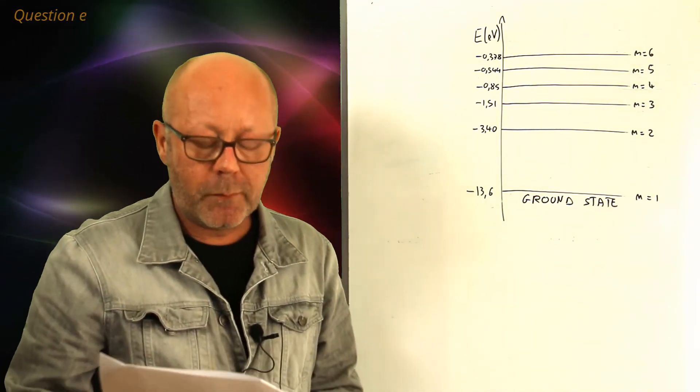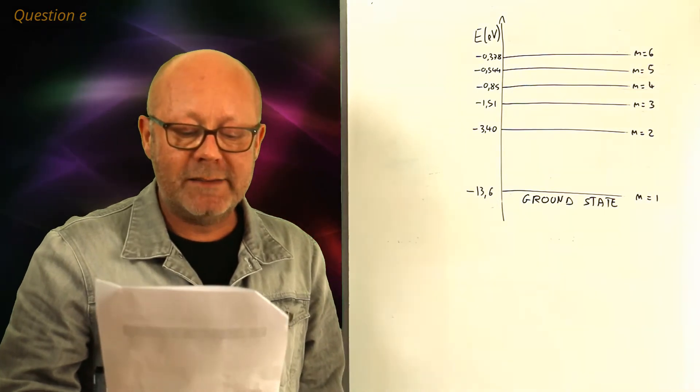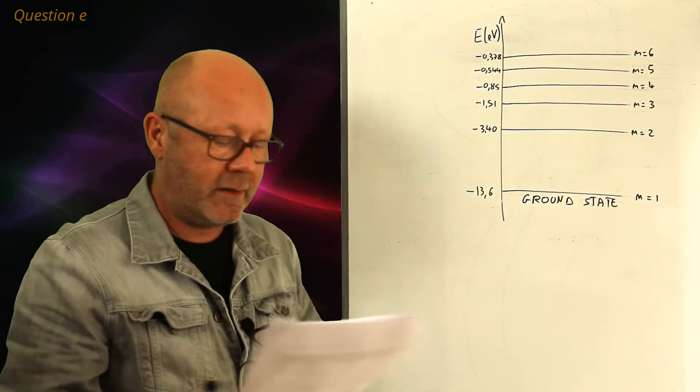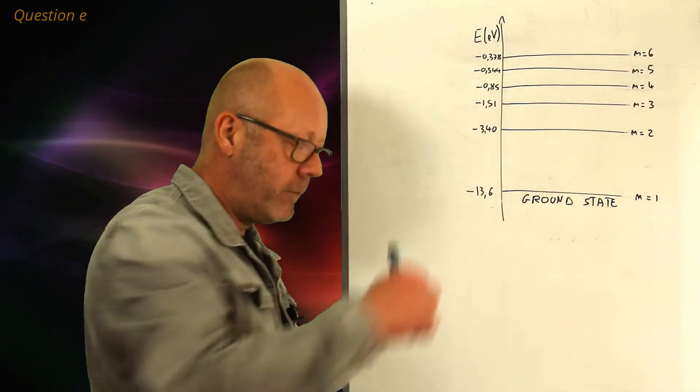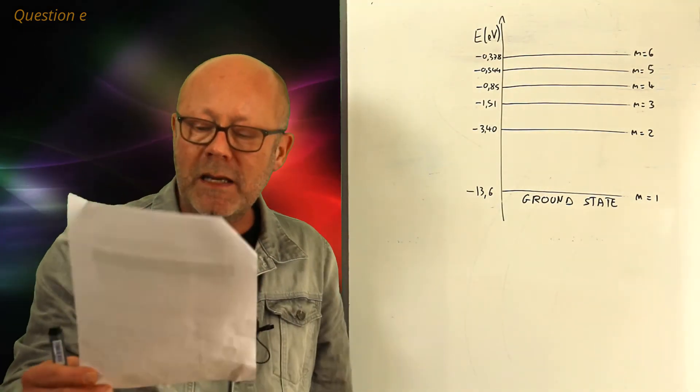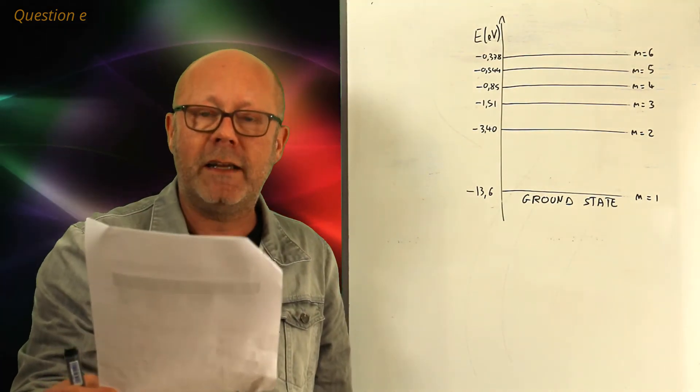Right. Question E. Assume that we excite an atom of hydrogen up to its level N equals 5. How many emission lines would we expect to find in its spectra?